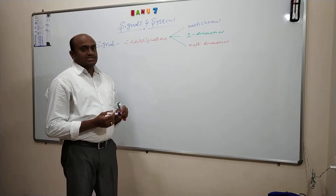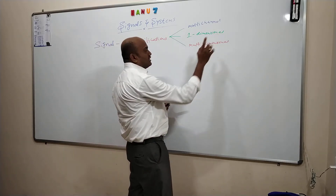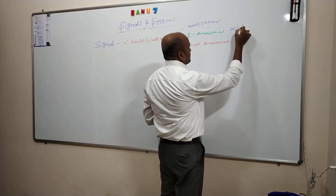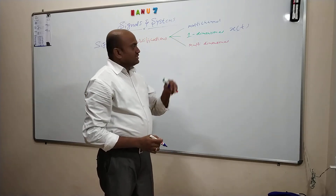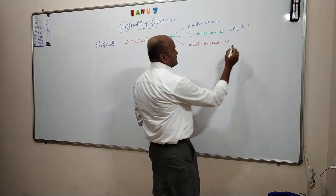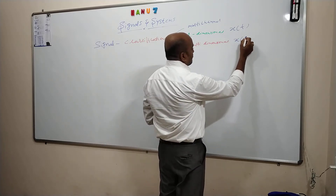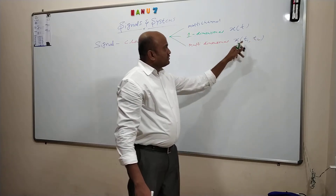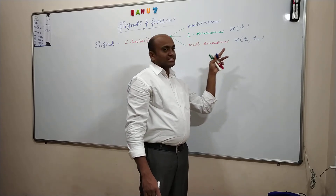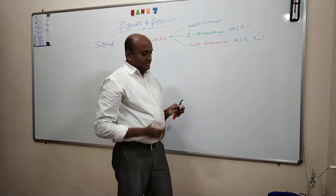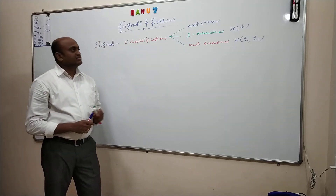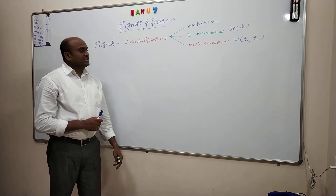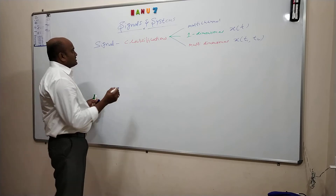Coming to one-dimensional signals: all signals which have only one independent variable are called one-dimensional signals. The example is x of t — here there is only one independent variable. For the third category, multidimensional: a signal is having one or more independent variables — t1, t2, this is a two-dimensional signal; t1, t2, t3 is a three-dimensional signal. Like that, we can get multidimensional signals. A signal with only one independent variable is one-dimensional; a signal with one or more independent variables is multidimensional.